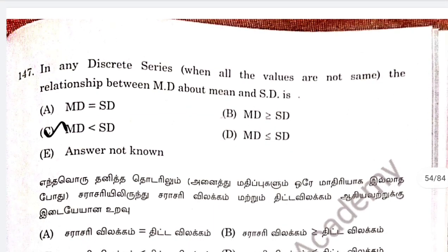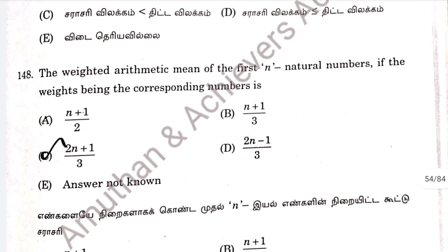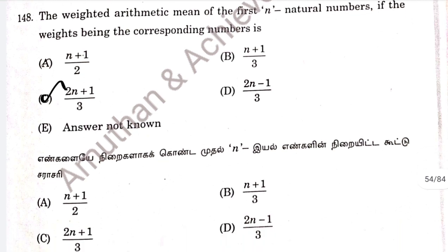Question 147: in any discrete series, when all values are not equal, the relationship between mean deviation about mean and standard deviation is that mean deviation is less than standard deviation. Option C. Question 148: the weighted arithmetic mean of the first n natural numbers with weights being the corresponding numbers is 2N plus 1 by 3. Option C.